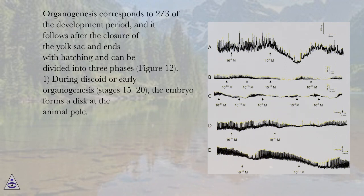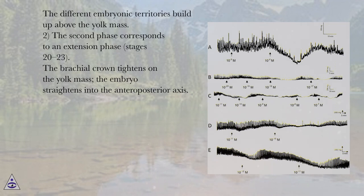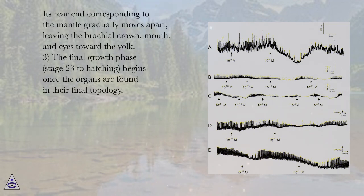Organogenesis corresponds to two-thirds of the development period. It follows after the closure of the yolk sac, ends with hatching, and can be divided into three phases, figure 12. First, during discoid or early organogenesis (stages 15 to 20), the embryo forms a disc at the animal pole and the different embryonic territories build up above the yolk mass. Second, the extension phase (stages 20 to 23): the brachial crown tightens on the yolk mass, the embryo straightens into the anteroposterior axis, and its rear end corresponding to the mantle gradually moves apart, leaving the brachial crown, mouth, and eyes toward the yolk.